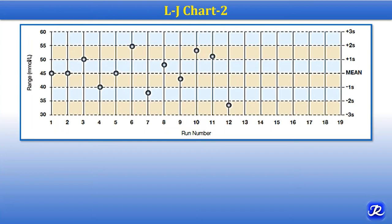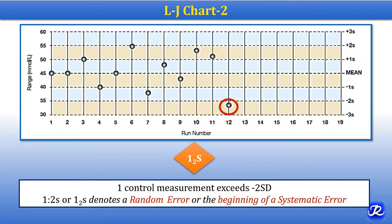In the second Levy-Jennings chart, observe all the control measurements. At the 12th run, this control point is above the minus 2 standard deviation line — so this is the 1-2S rule. This is a warning rule, not a rejection rule. It denotes random error or the beginning of systematic error.